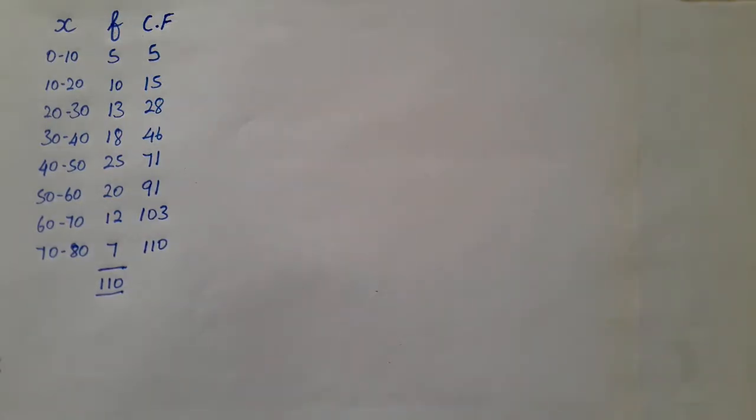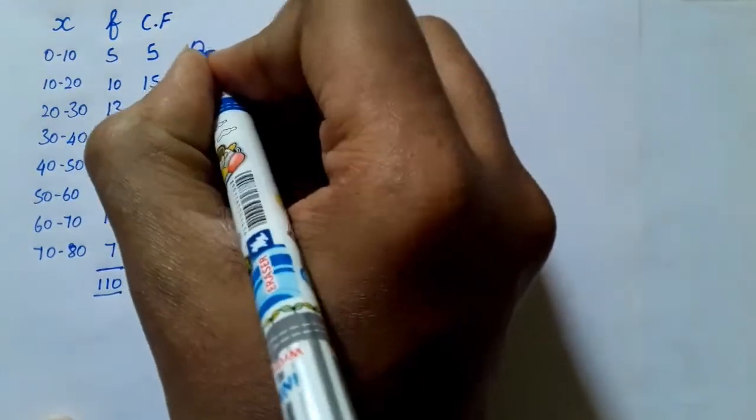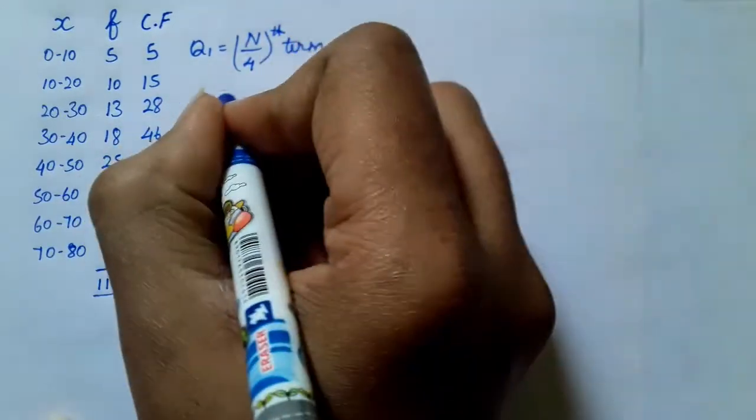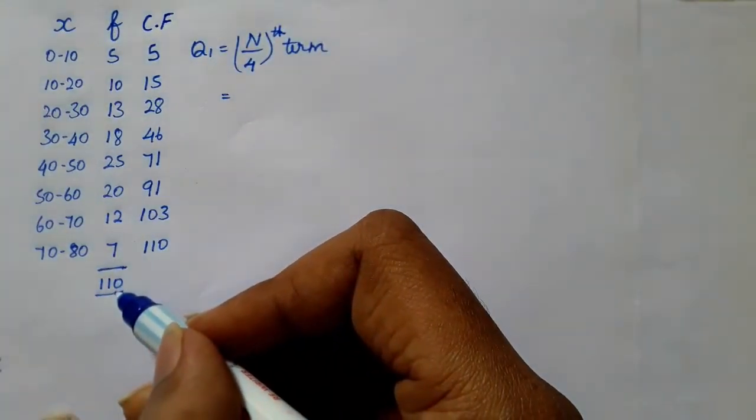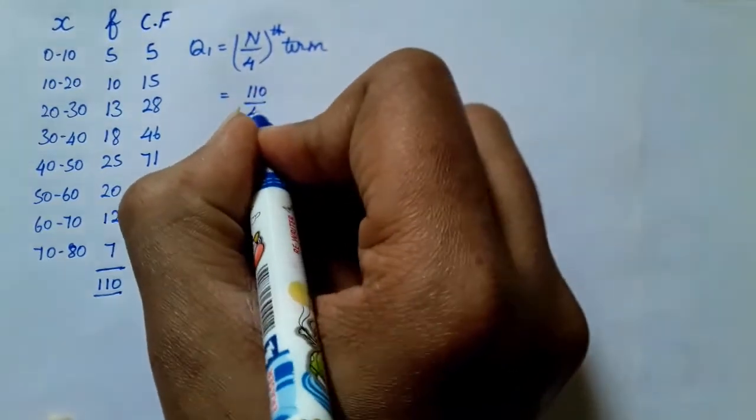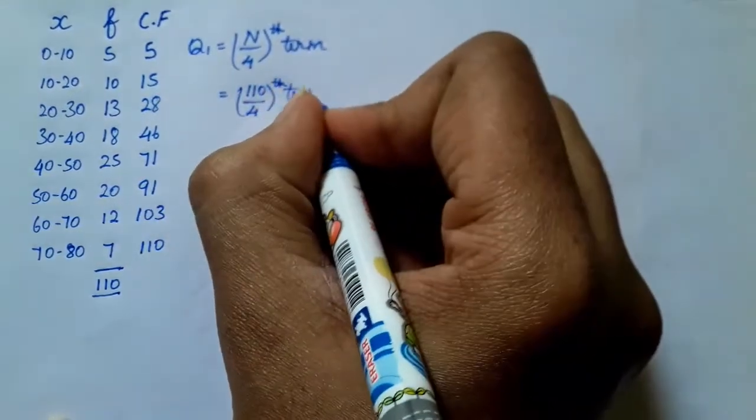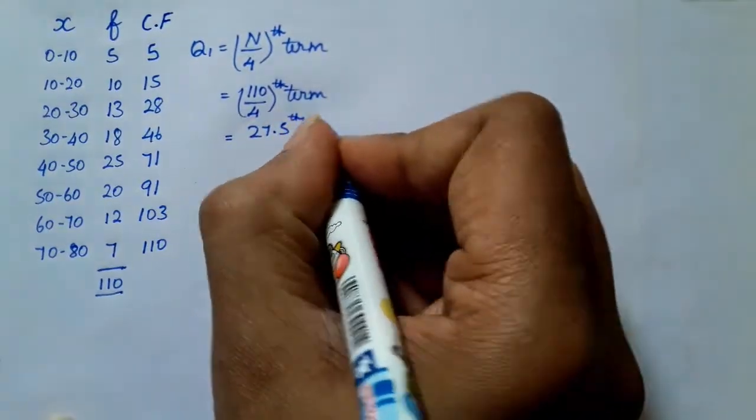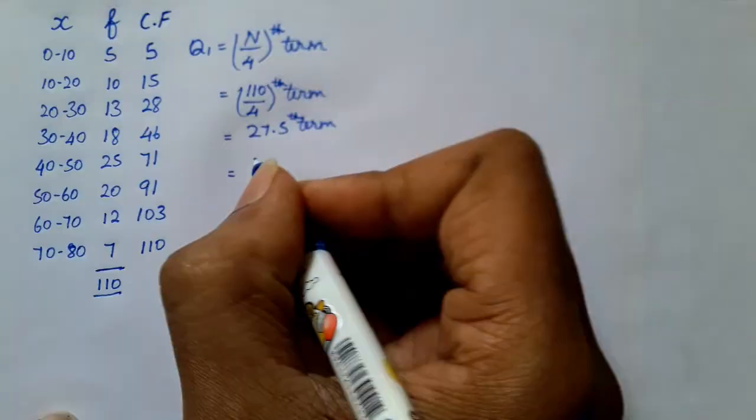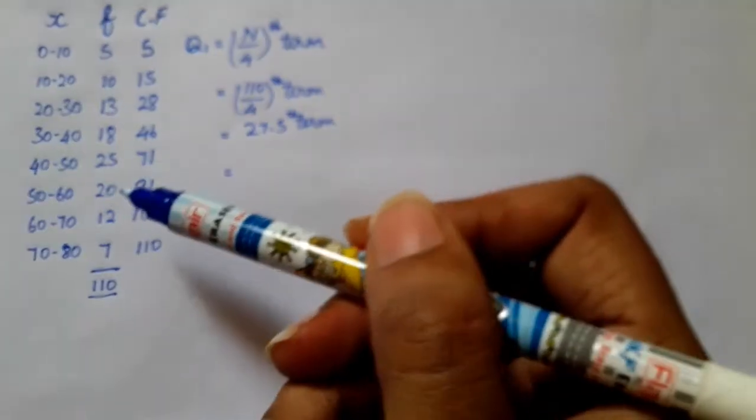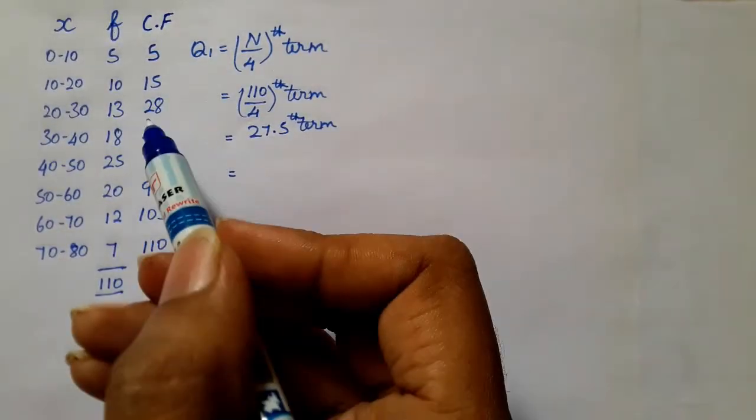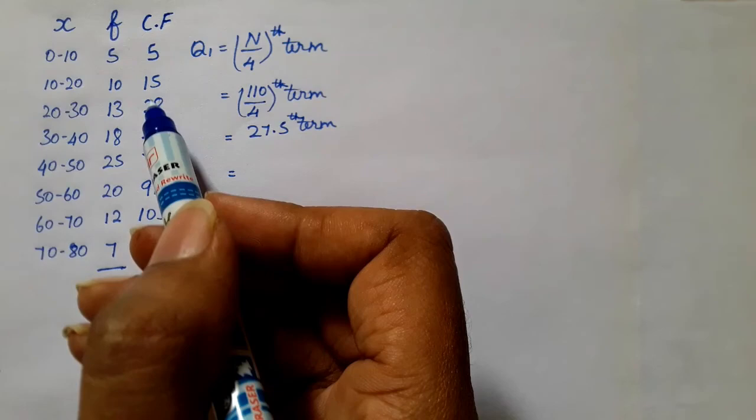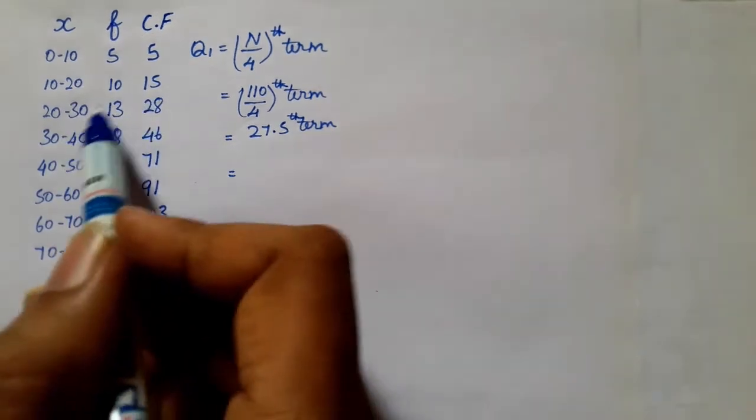Next, we will talk about q1, q2, q3. Q1, this is the formula. We have to divide it, n by fourth term. The term is 27.5. And 27.5, the table column is 27.5 and we will go to the middle of the table and the third row is closer so the third row is q1.